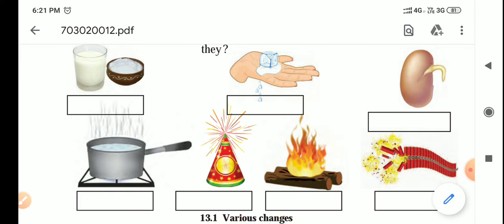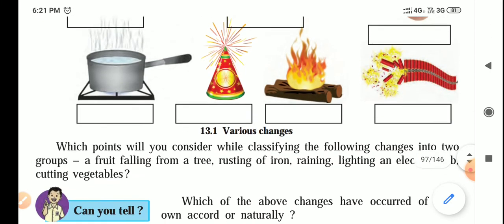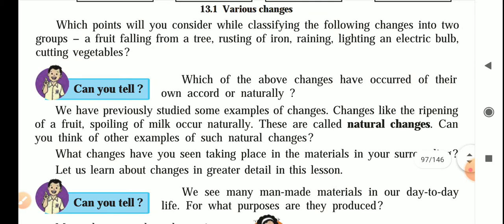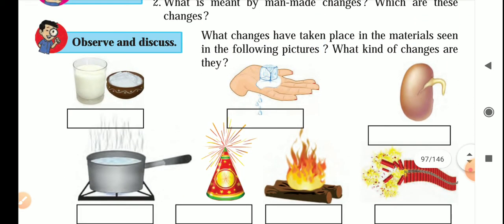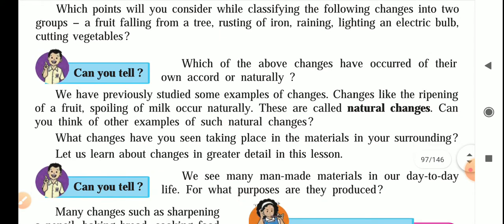You have to light the firecrackers — only then will they burst. Changes like the ripening of a fruit, sprouting, and spoiling of milk occur naturally. These are called natural changes. The examples are sprouted bean, spoiling of milk, and ripening of a fruit. If a fruit is on the tree it will ripen naturally, but if it is drawn from a tree then you have to make some arrangements for the ripening of the fruit.